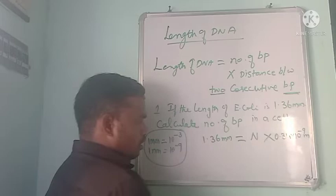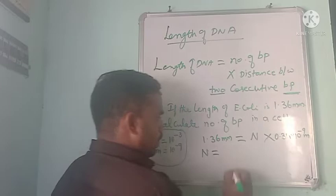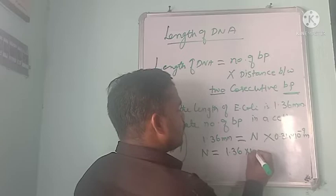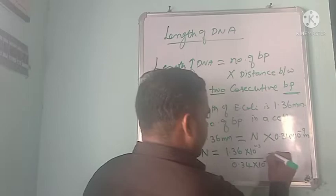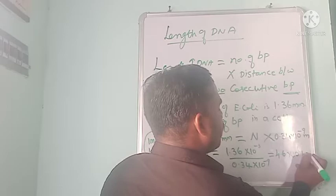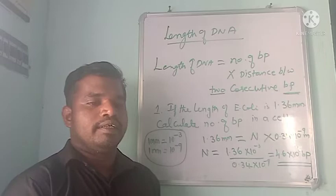We are going to find out the number of bases present in this cell. So we write 1.36 × 10 to the power minus 3 divided by 0.34 × 10 to the power minus 9. When we do the calculations, we get 4.6 × 10 to the power 6 base pairs. This is the answer.